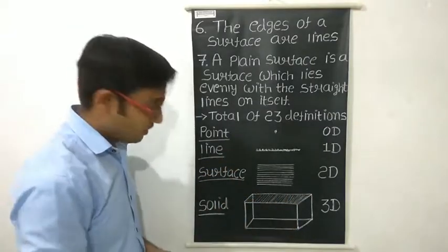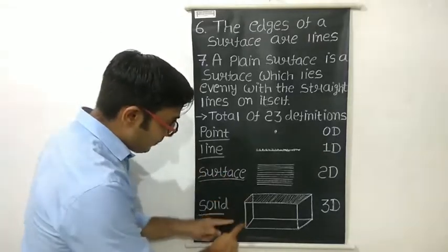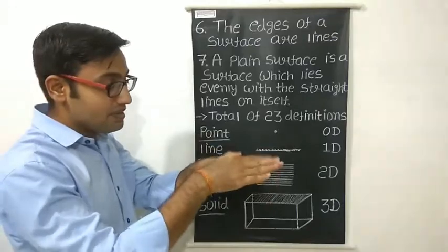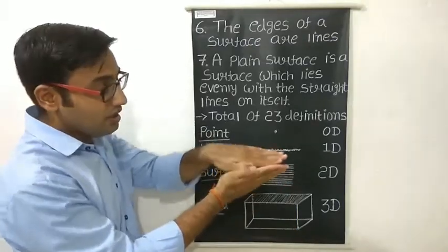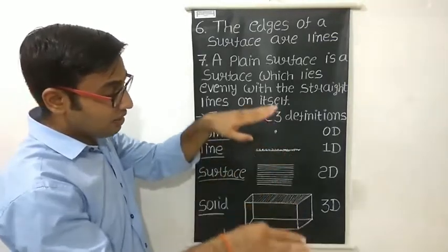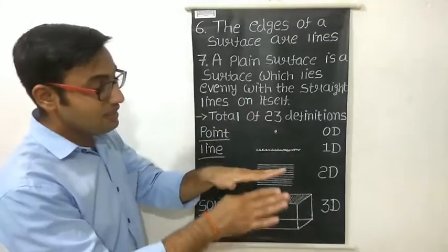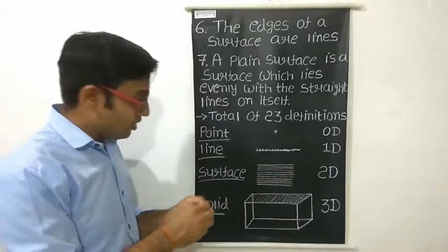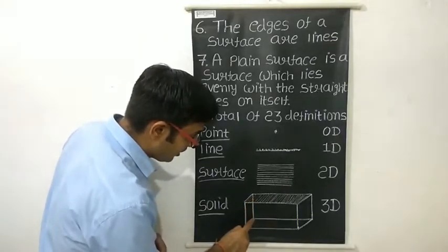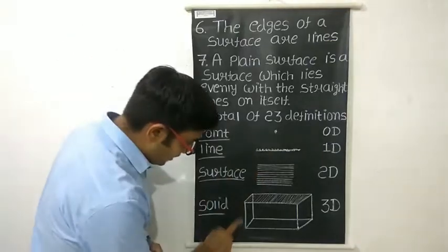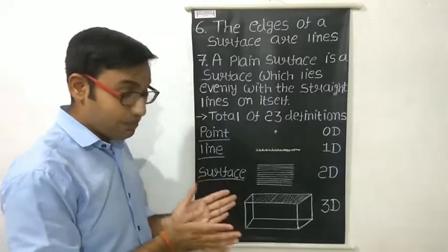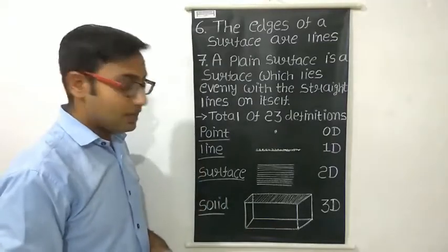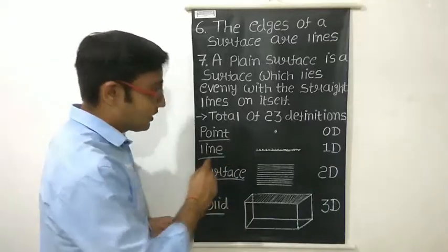In a solid, the upper portion is a surface, the front side is a surface, the back side is a surface, and the left and right sides are surfaces. When two surfaces meet each other, they form a straight line. And when two straight lines meet each other, they form a point. So the intersection of two lines is a point, and the intersection of two surfaces is a line.